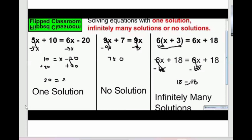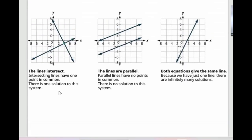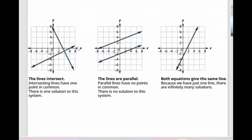And one solution means in the graph, two lines intersecting at one point.